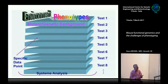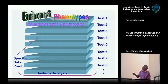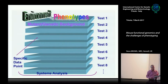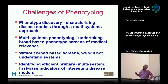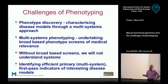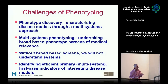This is the enormity of the challenge. We want to take mutations for every gene in the mouse genome, under specific environmental conditions, with a whole range of tests, and fill in a huge 3D matrix of data. That will really tell us how biological systems work. In words, these are the challenges of phenotype discovery: characterizing disease models through a multi-systems approach. Multi-systems phenotyping means broad-based phenotyping. Without broad-based screens, we won't understand biological systems. We need efficient, primary, high-throughput testing platforms for mice.